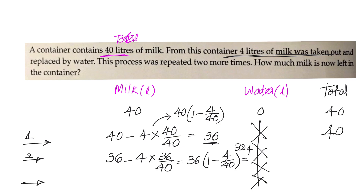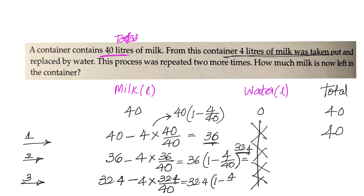For the third operation, we have 32.4 liters of milk and we want to remove 4 liters of liquid. Out of that 4 liters, how much milk is removed is based on the ratio 32.4 divided by 40. So milk left is 32.4 into 1 minus 4 by 40, which simplifies to 32.4 into 0.9. Multiplying gives us 29.16 liters. So our answer is 29.16 liters.